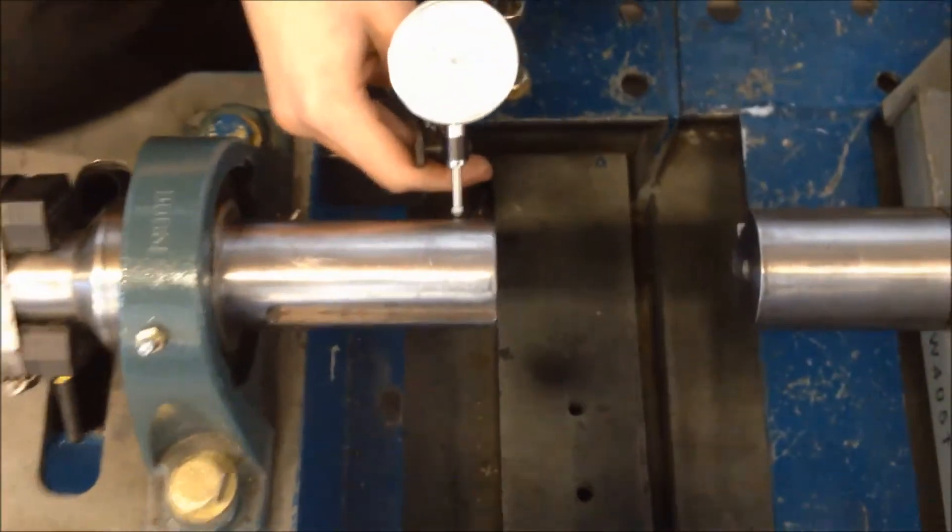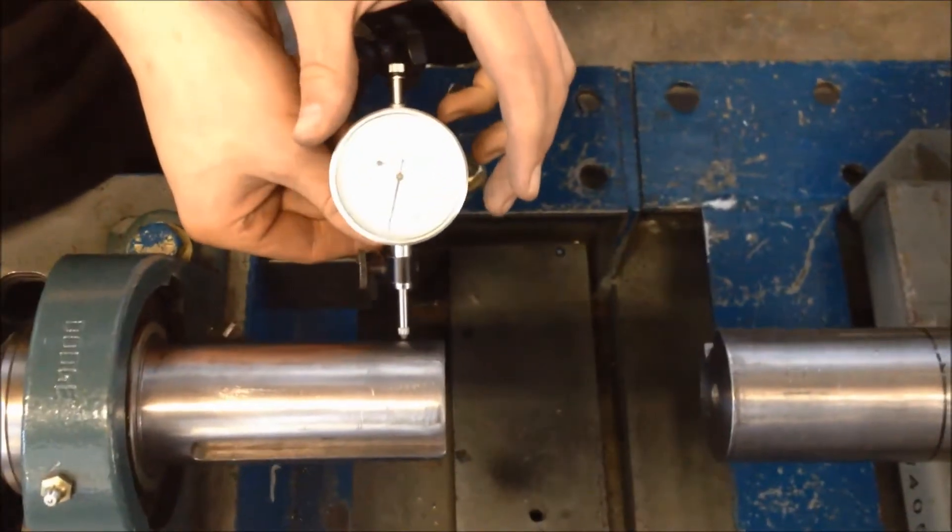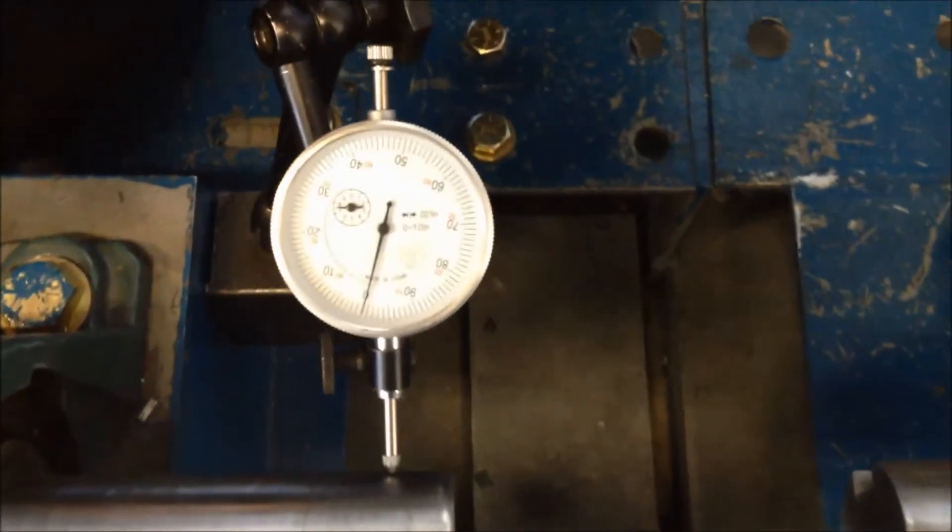Use a dial indicator to measure the shaft run out. Total indicator run out should not exceed 5,000 for 1,800 RPM applications and 3,000 for 3,600 RPM applications.